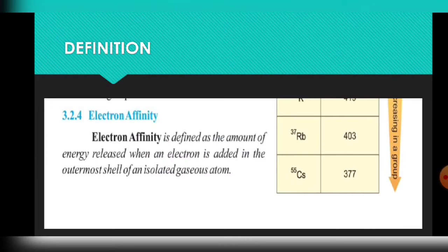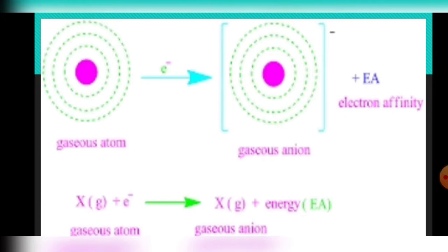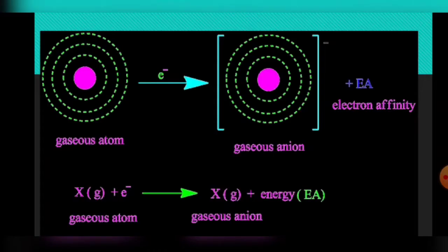The reason for the release of energy is that there are two types of elements in the periodic table: electronegative elements and electropositive elements. Electropositive elements have less electron affinity values because they have an incomplete outer shell with extra shells, and electrons already present in the outer shell cause repulsion. So when we add an electron, they require energy and release less energy.